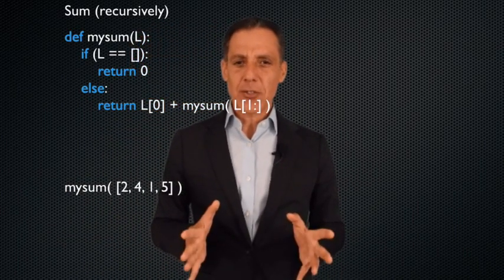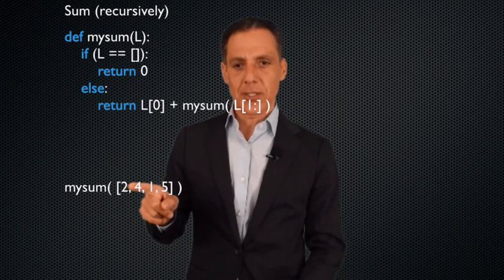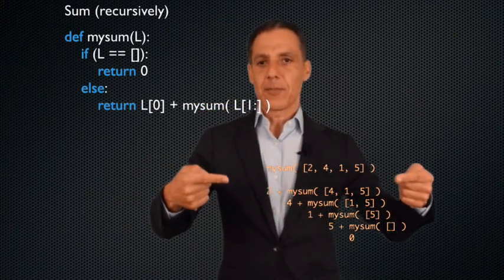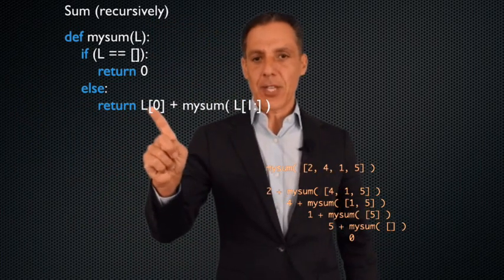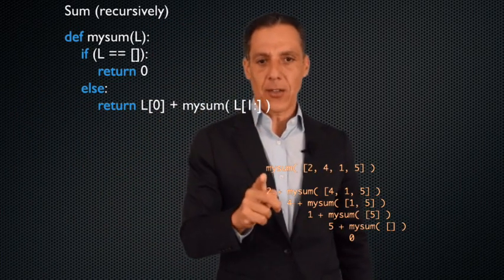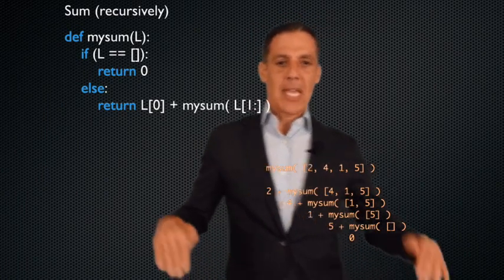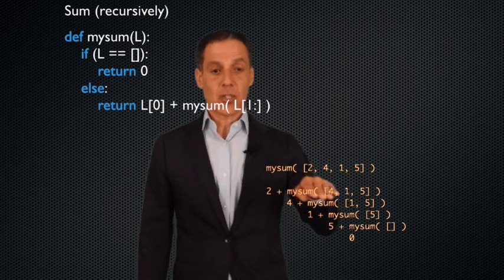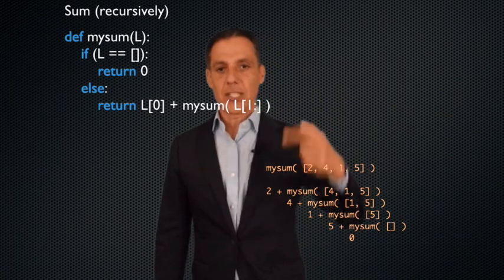Let's make sure we understand how this works by walking through an example with this list of four elements. `my_sum` of [2, 4, 1, 5]. Let's go into the code. The list isn't empty, so peel off the first element and add it to the recursive call of everything else. That's 2 plus `my_sum` of [4, 1, 5]. Am I done? No — I want to add two things, but that is a function call, so I eventually have to go call some function and get an answer, and then I can return.